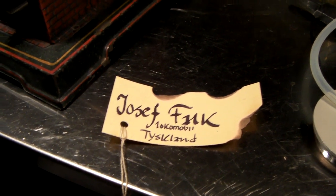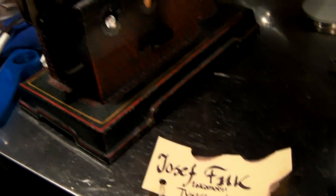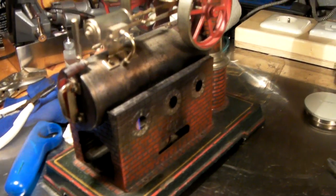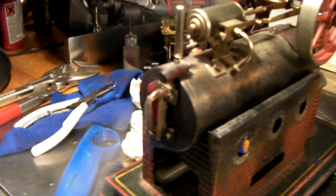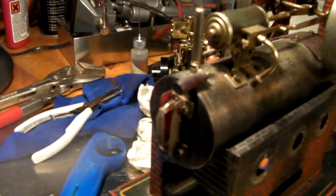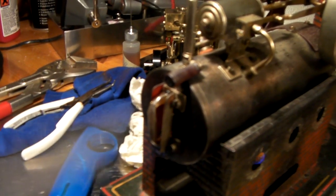Here we've got a Joseph Falk, quite an old one. Everything seems to be working okay but we've got a real big steam leak at the top of the water level indicator.